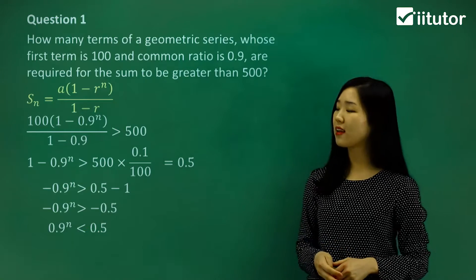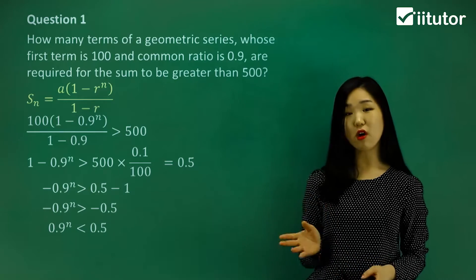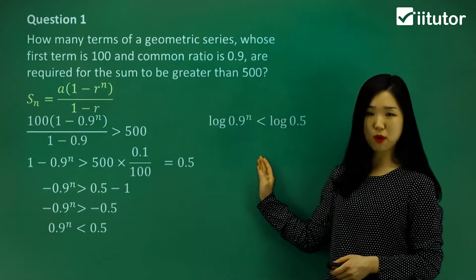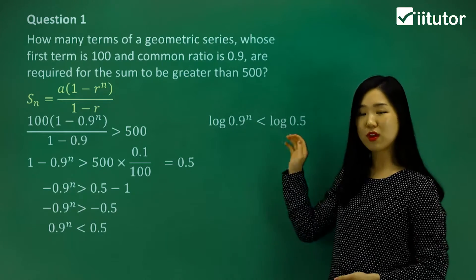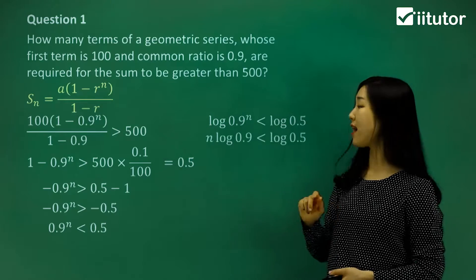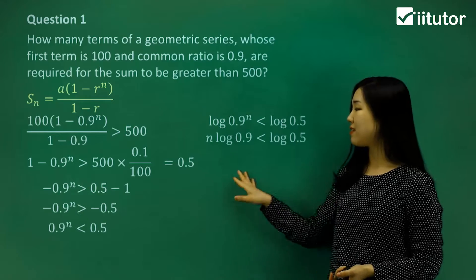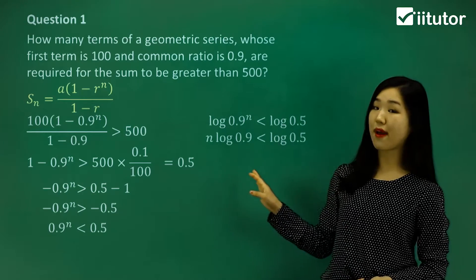So we have to solve for n, but n is on the power. So the first ideal way is to use logs. I'm going to log both sides just like this. And now that I've done that, the power n, we can drop it down to the front. So the n, drag it down to the front. Now, what I'll do next is divide by the log 0.9 to the other side, and then I'll have n by itself left.